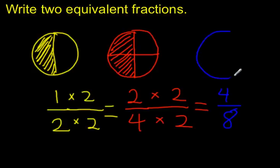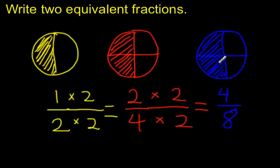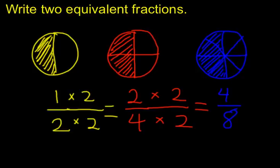Let's see what that would look like. Starting with my circle, I'll shade 1 half. When I wanted twice as many parts, I divided my 2 parts in half. Then if I want twice as many parts as my 4 parts, I divide each of those in half. And there we go — you can see we have 1, 2, 3, 4 parts shaded out of 4, 5, 6, 7, 8. That's 4 out of 8.